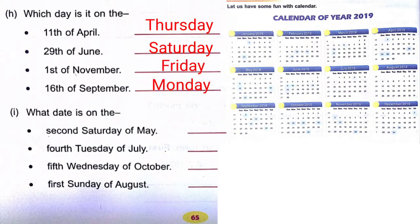1st November is a Friday, and 16th September is a Monday. Next, what date falls on the given day? Look at the calendar — there will be questions related to specific dates and events. Also, a 2022 calendar is shown for reference to help you learn the dates.